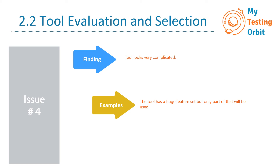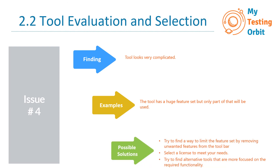Do take scalability into account as well — consider how you plan to scale the test automation framework in the future. There should be a balance. Possible solutions include: trying to limit the feature set by removing unwanted features from the toolbar. Most tools are customizable, so if there are 10 features but you only need two to start, you can disable the others so your focus stays on what you need.